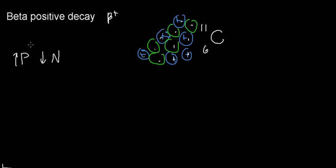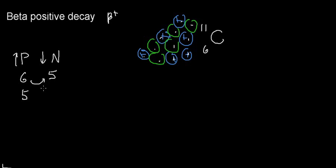We have six protons and five neutrons. If I took one proton and converted it, I'd have five protons and six neutrons. My atomic number changes but the total is still 11. Usually it is more stable to have a better neutron-to-proton ratio.